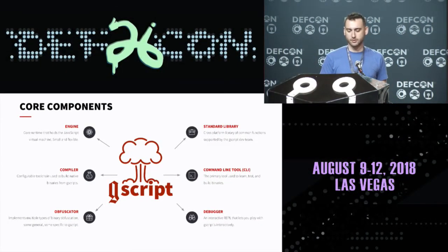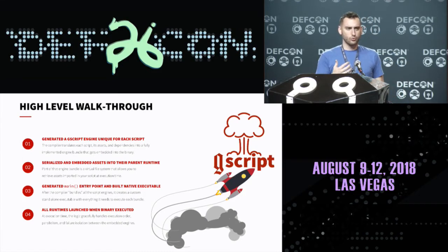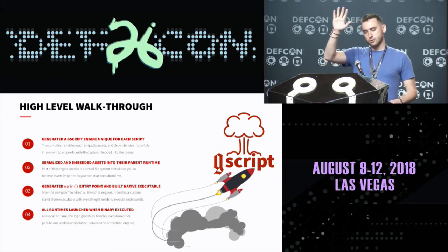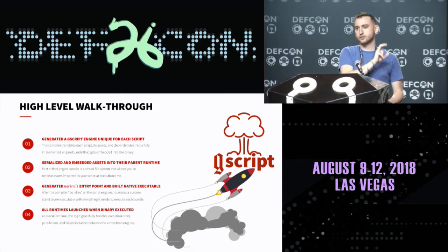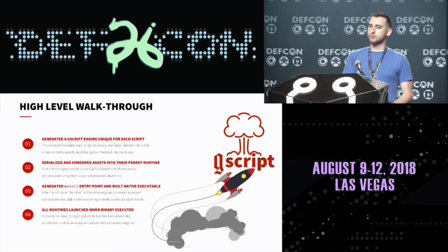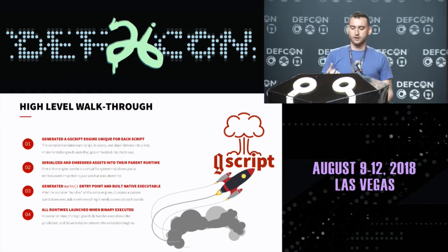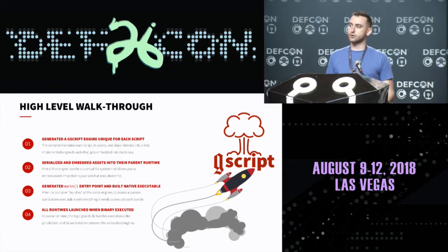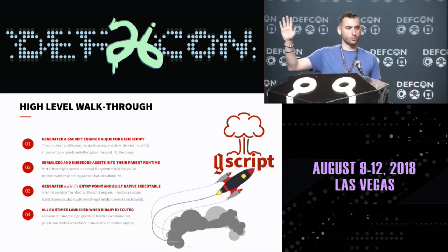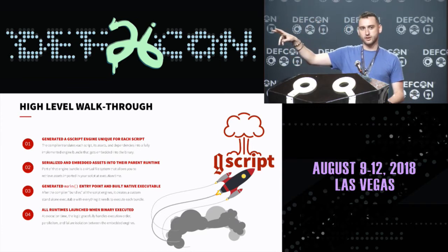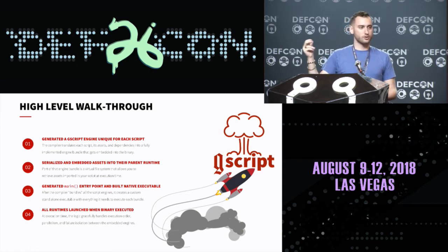Here's a high-level walkthrough of what happens. When you use the compiler, it first creates representations of engines within memory for each script you pass in. Next, every payload you gave it — whether interpreter payload, shellcode, SSH keys — gets encrypted and embedded directly into that virtual machine in memory. After that, it takes all the virtual machines — one isolated per script — and sews them all together, just like with needle and thread, into an actual executable for whatever platform you're targeting. When that executable is run, the main function launches every one of those runtimes in parallel.